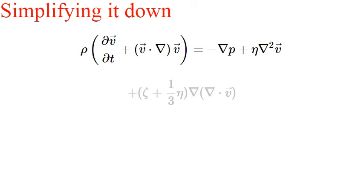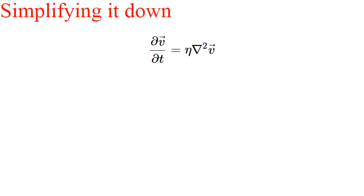But we can go further. Let us assume we have no pressure gradients and that the second term on the left hand side is also zero. We are then left with something that may seem familiar. We have a diffusion equation.